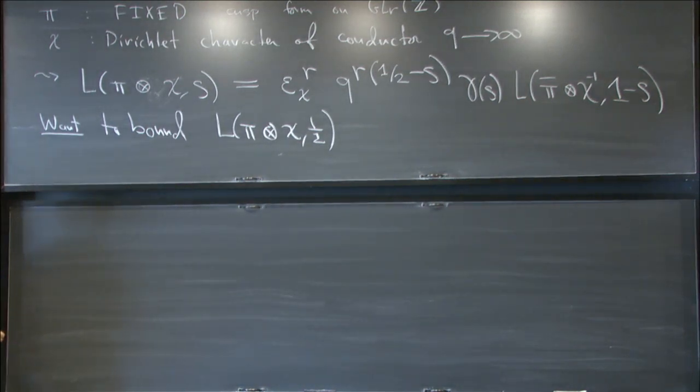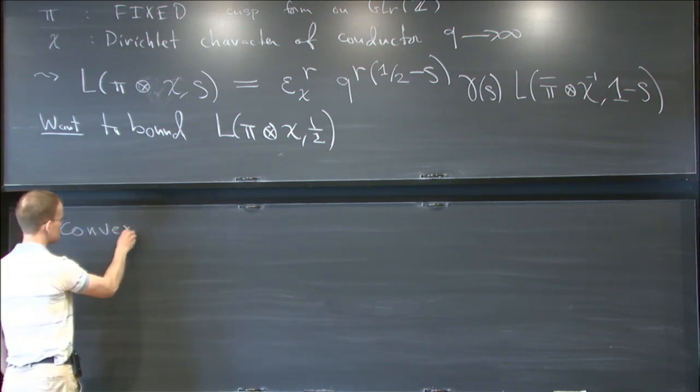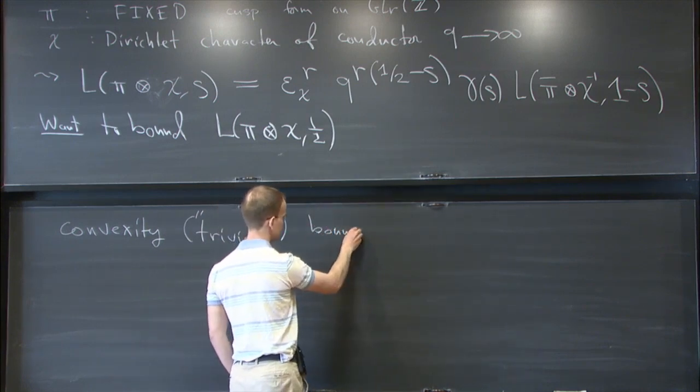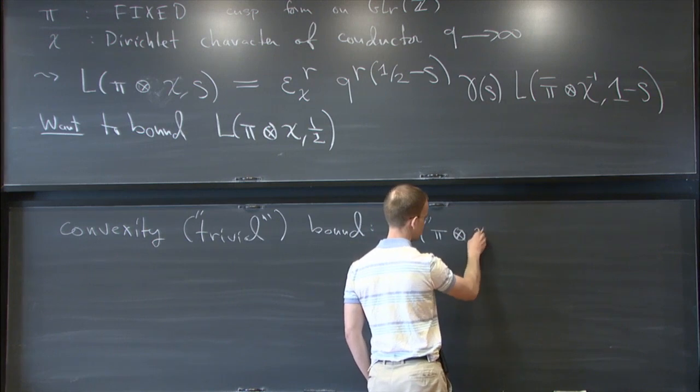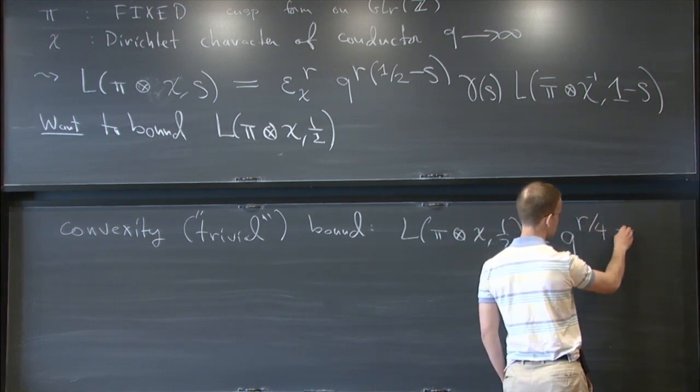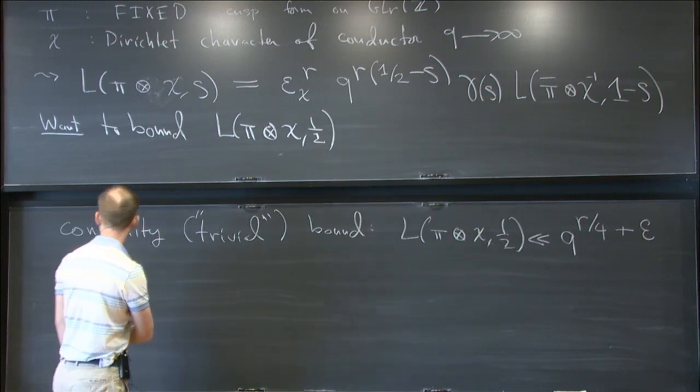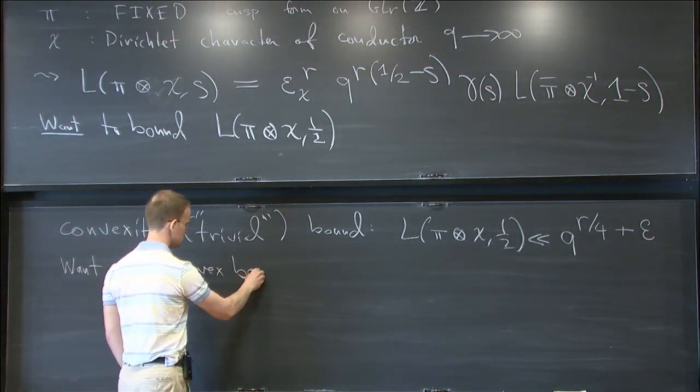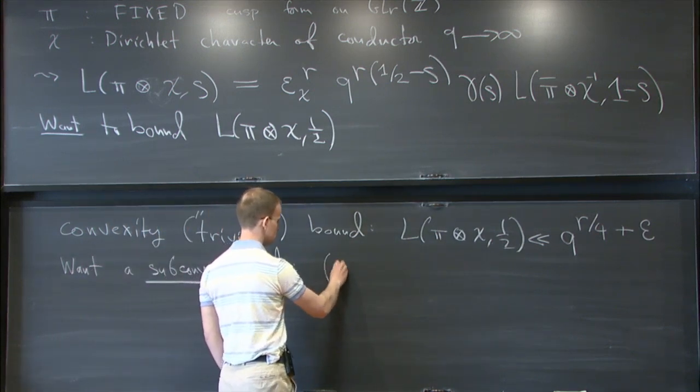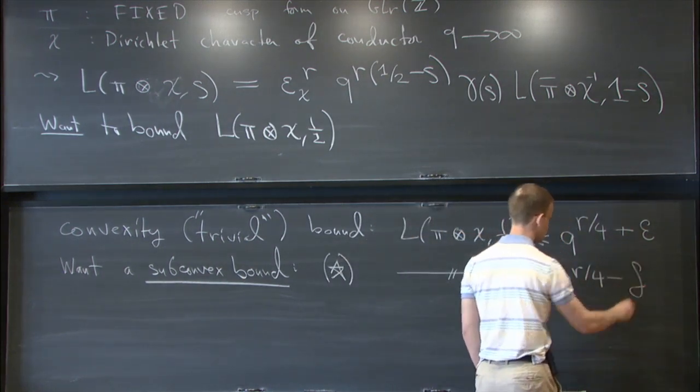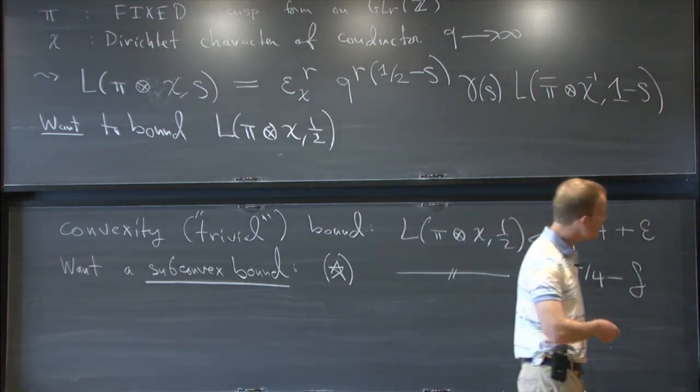There's a standard set of nomenclature. The convexity or trivial bound says this number is bounded by some constant multiple of q to the r over 4 plus a small positive constant. We want to prove a subconvex bound, which I'll call star, which is the same thing but with a slightly smaller exponent.